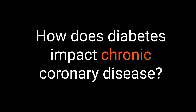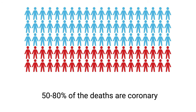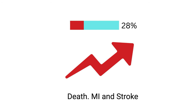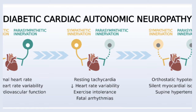How does diabetes impact chronic coronary disease? Looking from the diabetes side, coronary disease is responsible for 50 to 80 percent of the deaths in patients with type 2 diabetes. Looking from the coronary side, type 2 diabetes results in a 28 percent higher chance of death, myocardial infarction, or stroke. The symptoms of coronary disease in patients with diabetes are usually less severe and may follow an atypical pattern.